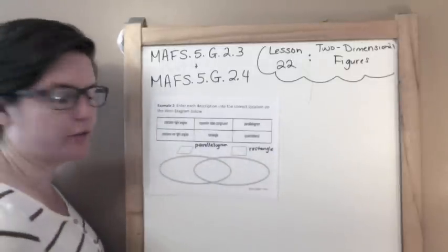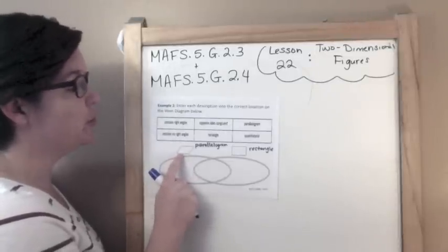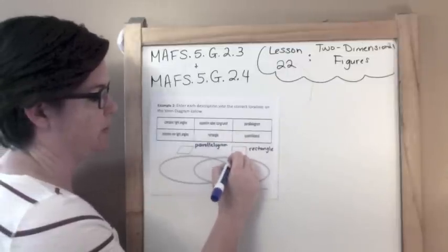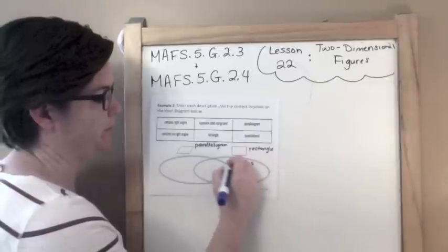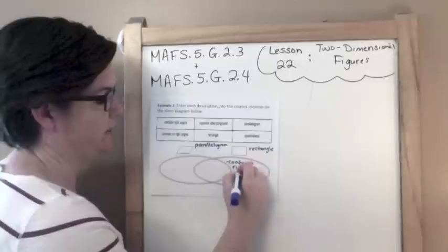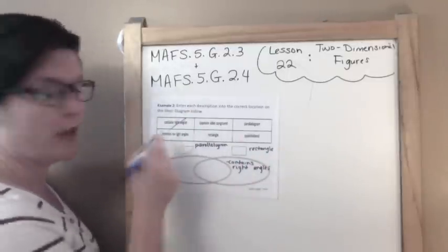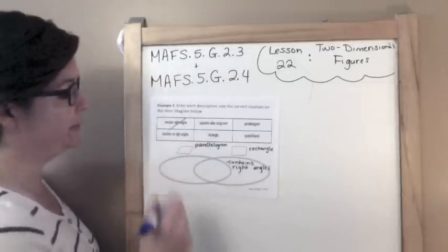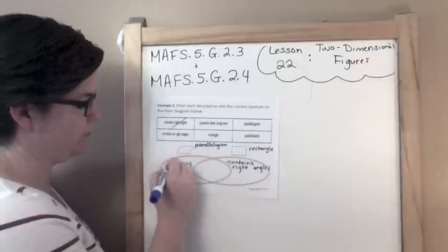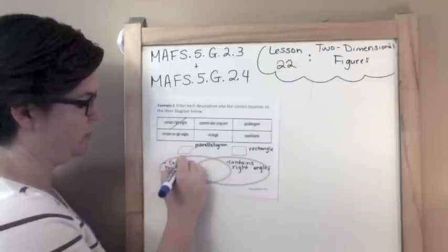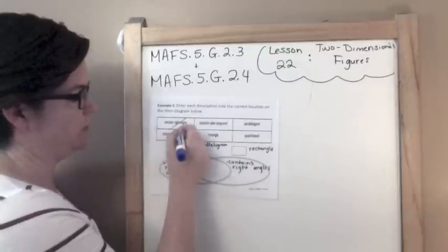Contains right angles. A parallelogram, this parallelogram does not have right angles. So it's gonna go here, contains right angles. Contains no right angles, that would be my parallelogram right here.